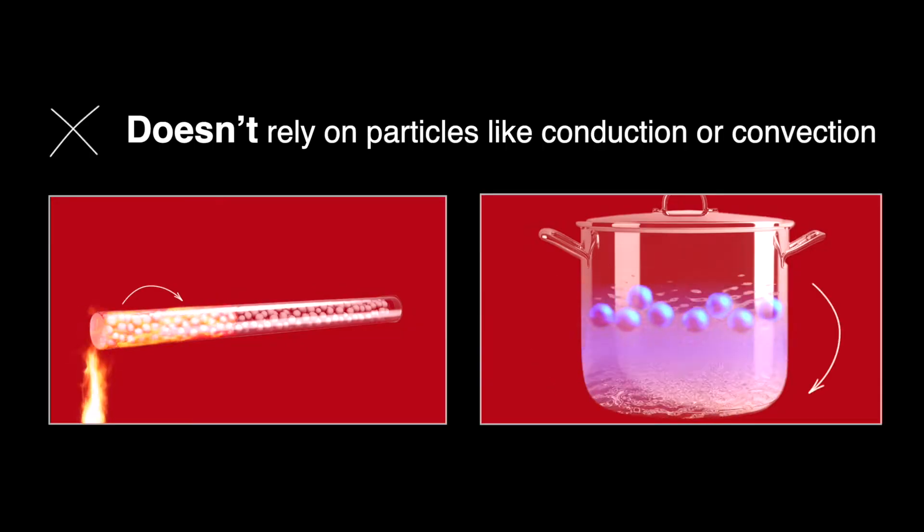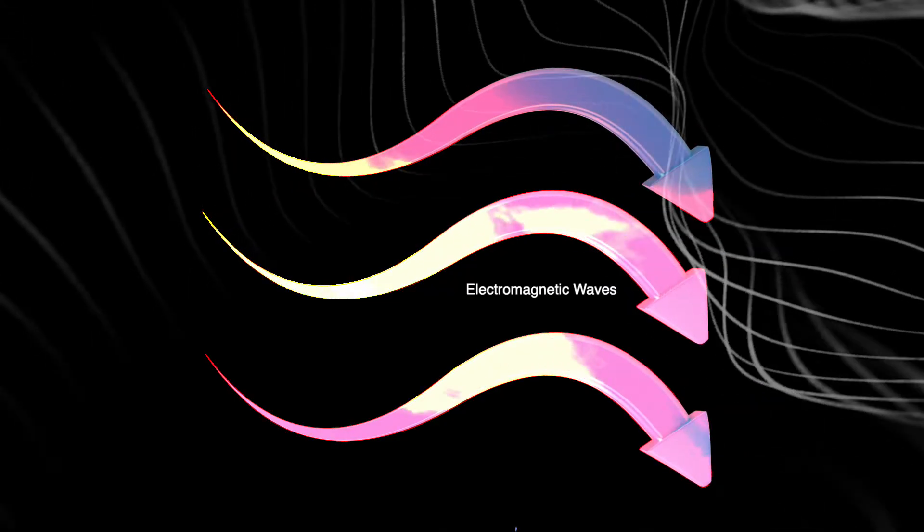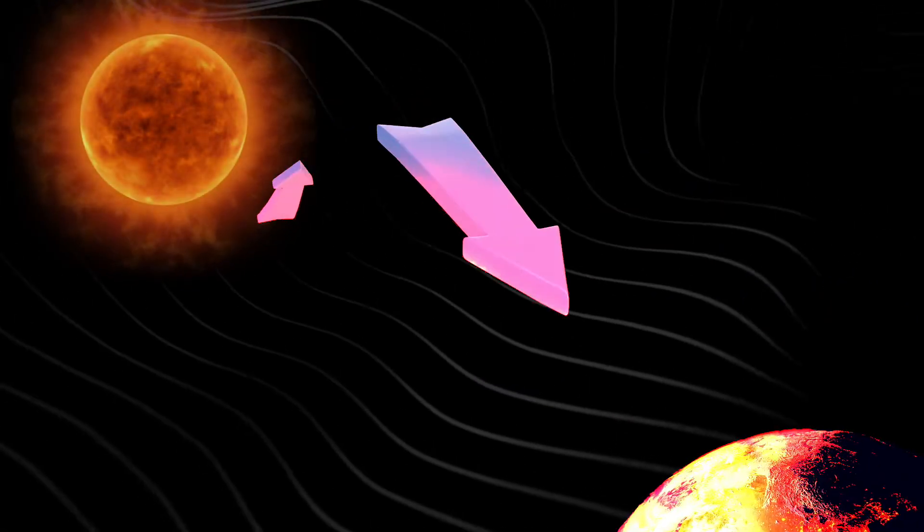Now let's look at radiation. Heat transfer through radiation doesn't rely on particles like conduction or convection. Instead, it travels through electromagnetic waves. These waves can move through empty space, which is how heat from the sun reaches Earth.